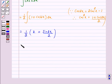And this is equal to x/2 + sin2x/4. Now this is F(x) because it is the antiderivative of the given function cos²x.